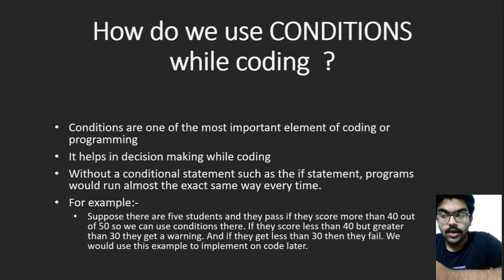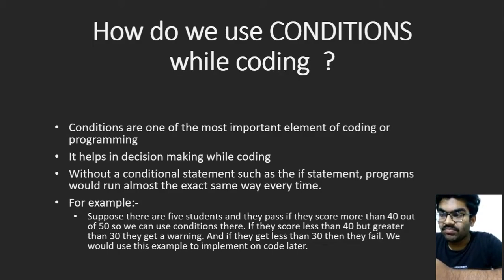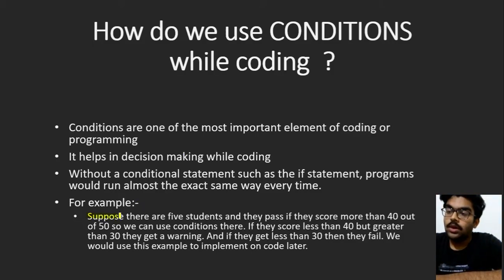Conditions are used for decision making in the coding process. Suppose that biscuit packet scenario is coded — if you set a budget of 15 rupees, there is no way to know which packet you will buy without a condition. In this tutorial we will use a sample programming question about students having their exams. They need to score 40 or more to pass — so scoring more than 40 is one condition.